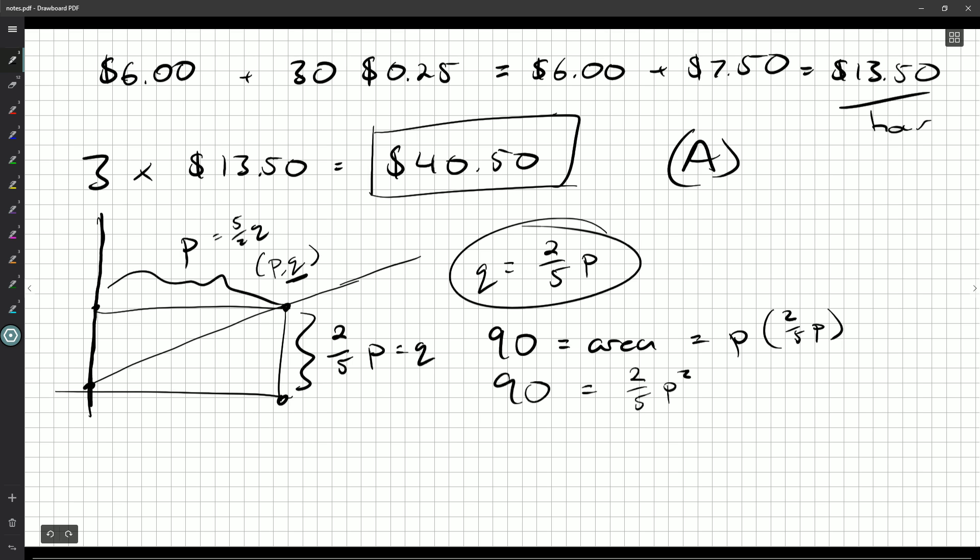Multiply by 5 on both sides. Divide by 2. And we'll get 45 multiplied by 5. So we'll get 225 is P². Just take the square root.